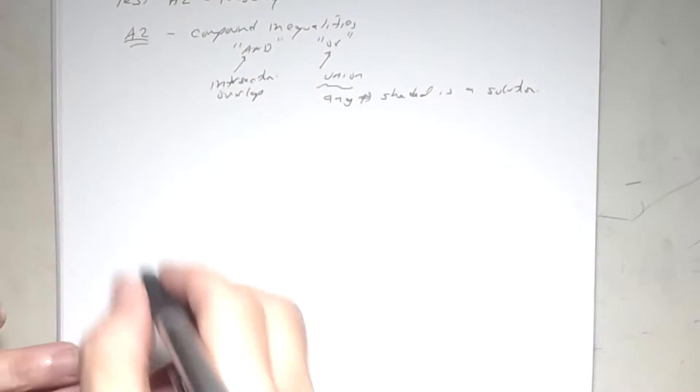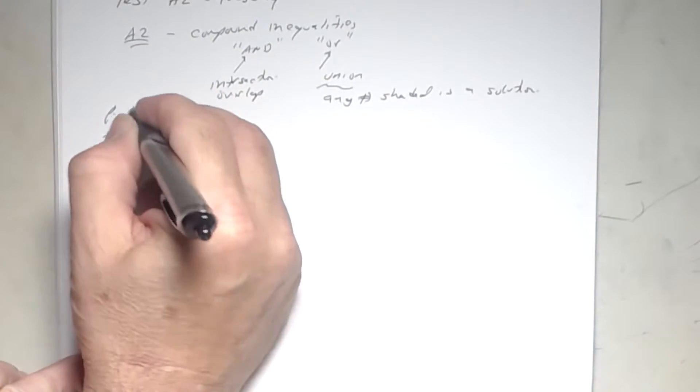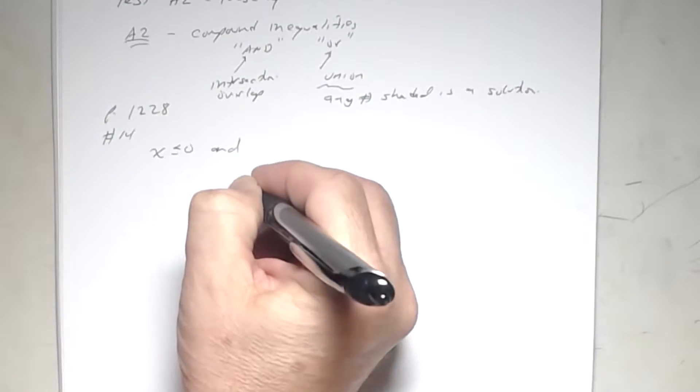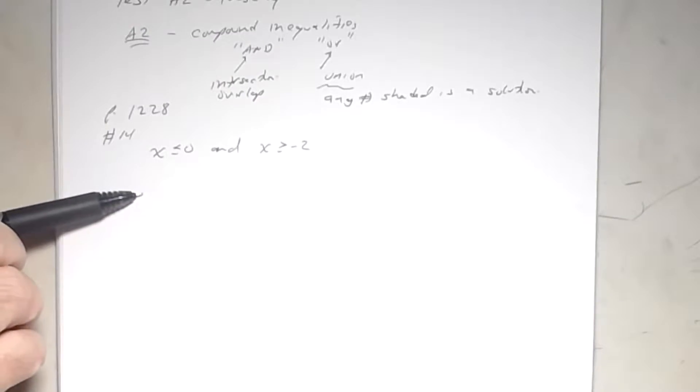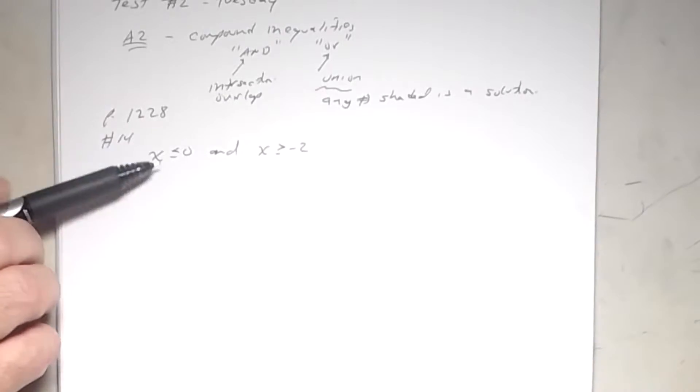Let's look at number 14 on page 1228. You're given that x is less than or equal to zero, and at the same time x is greater than or equal to negative two. Remember, on the worksheets you had to solve a linear inequality and get x by itself. Right now the x is already by itself.